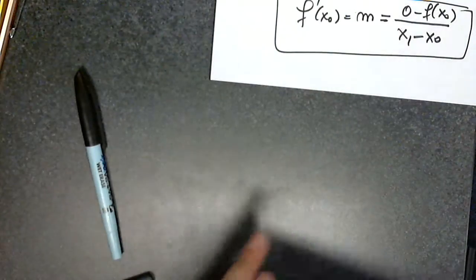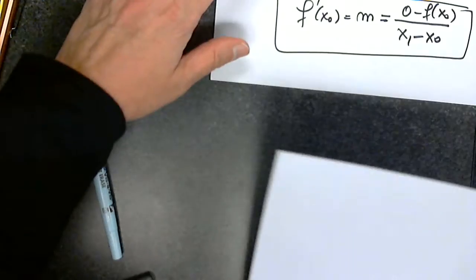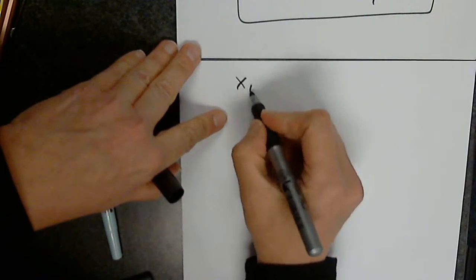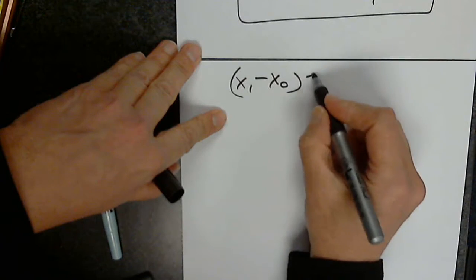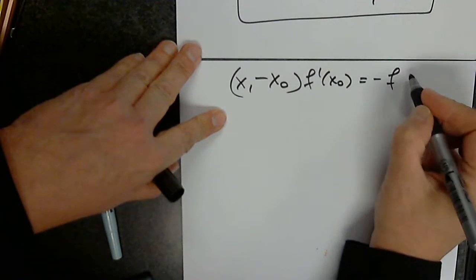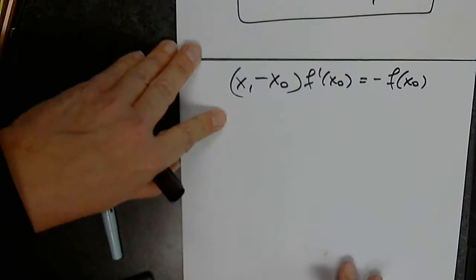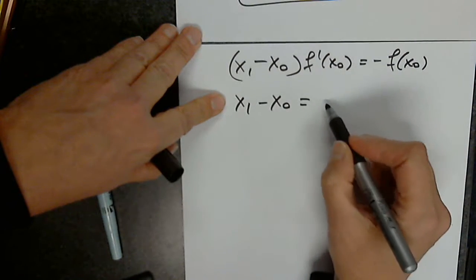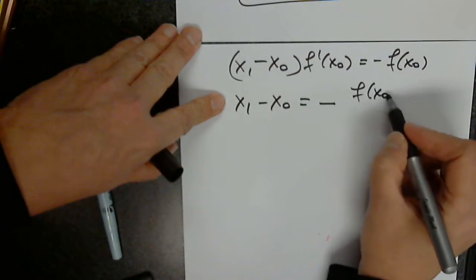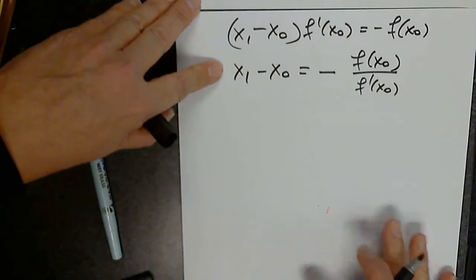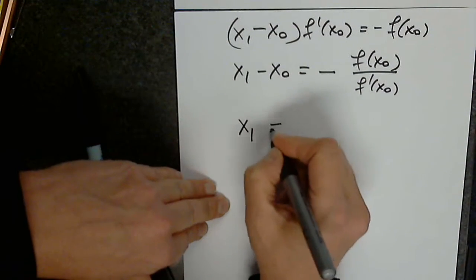x1 is called the first iteration of the method. So I will cross multiply. I have x1 minus x0 times f prime of x0 equals 0 minus, so it's negative f of x0. I will divide by this now. x1 minus x0 equals negative f of x0 over f prime of x0. And in order to find x1 I will write x1 equals x0 minus f of x0 over f prime of x0.